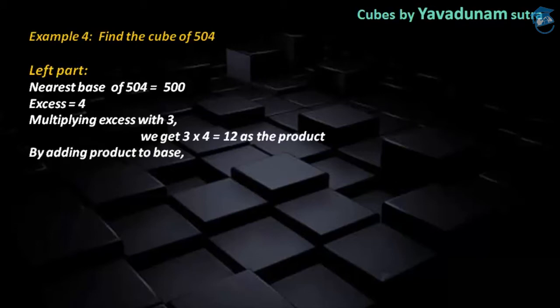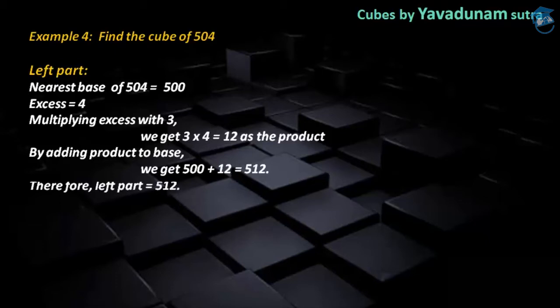After getting the product, we have to add it with the base 500. So by adding 500 with 12, we get 512. And this 512 is regarded as the required left part.